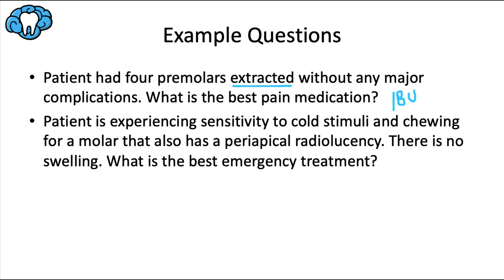Second example: a patient is experiencing sensitivity to cold stimuli and chewing for a molar with a periapical radiolucency, but there is no swelling — what's the best emergency treatment? There's no mention of fever or malaise and no swelling, so no antibiotics are needed. Instead, a pulpectomy or extraction should be performed to remove the infection, and NSAIDs can be prescribed for pain. These are examples of the case-like questions you might expect on board exams concerning pain and infection management.